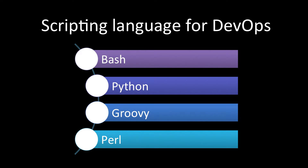Some of the popular scripting languages used day-to-day are Bash shell scripting, Python, Groovy, and Perl. There are others as well, like Ruby and some tool-specific languages, but these four are the most popular. Let's go through each in detail and look at the best use cases for each.